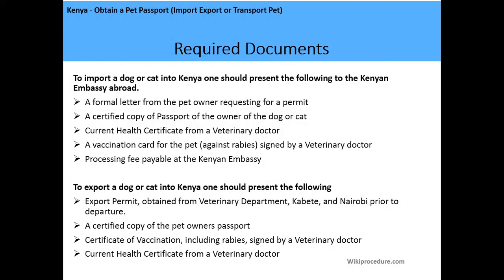Required documents to import a dog or cat into Kenya: present the following to the Kenyan embassy abroad — a formal letter from the pet owner requesting a permit, a certified copy of the passport of the owner, a current health certificate from a veterinary doctor, a vaccination card for the pet against rabies signed by a veterinary doctor, and a processing fee payable at the Kenyan embassy.